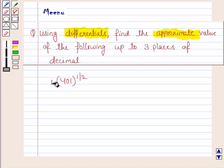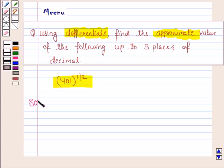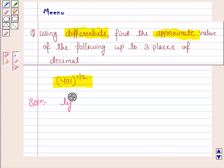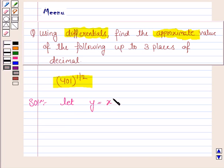And the given number here is 401 to the power 1 by 2. Let's now move on to the solution and define a function y in terms of x. Here we define y equal to x to the power 1 by 2.